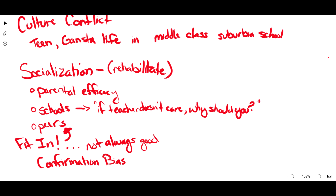Learning is pretty straightforward — we are beings that learn behaviors. If we show that you can be something else, that works. Control is about the idea that sometimes individuals can't control themselves or their urges, but bonds with family, peers, society, and school can make them less rebellious. But labeling is big, and I talked about it briefly before. Labeling has a serious impact, and I think we need to talk about it more often.